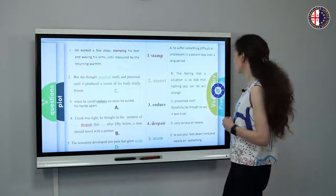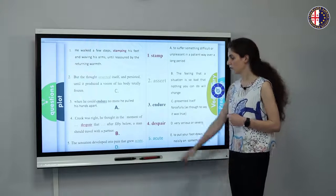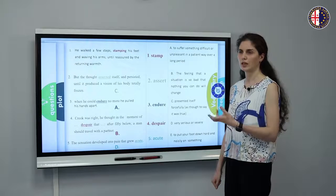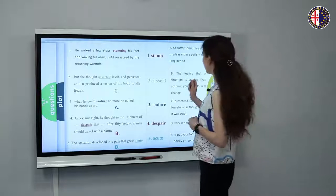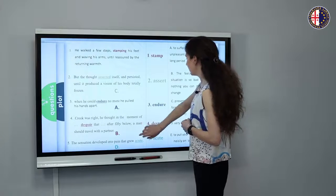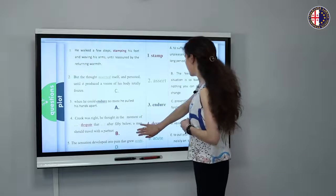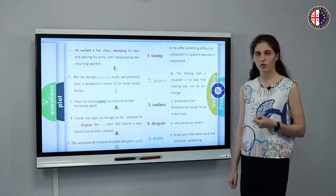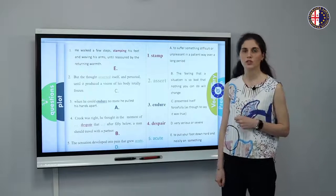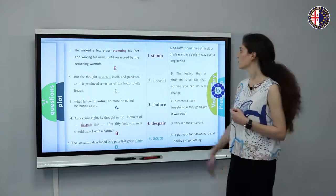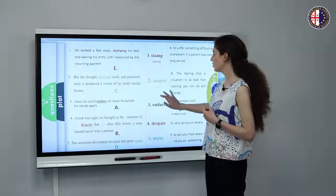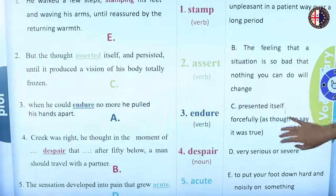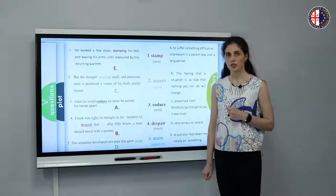Let's look at D: very serious or severe. 'Acute' would be the word. The synonym of it would be 'severe' — we can use this in another context like 'severe pain.' In order to learn vocabulary properly, we should also take into consideration the part of speech words belong to. 'Stamp' is a verb. 'Assert' is a verb as well. 'Endure' is a verb. 'Despair' is a noun, and 'acute' is an adjective.